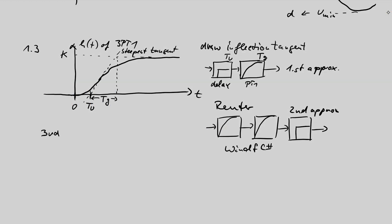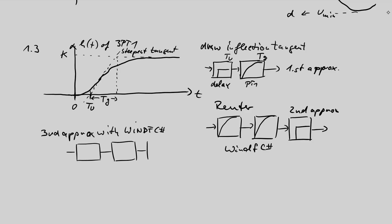The third approximation should be calculated with VinDF identification — VindFC#. There you should also identify a 2PT1 plus delay time model, and try to fit this curve as the third approximation.